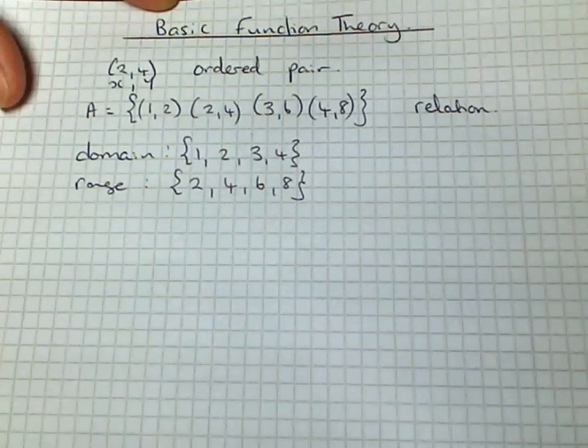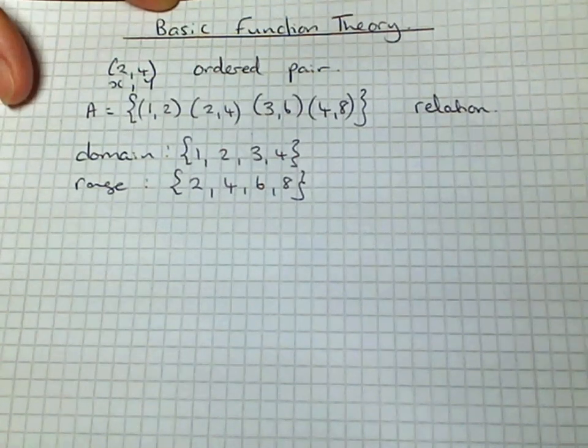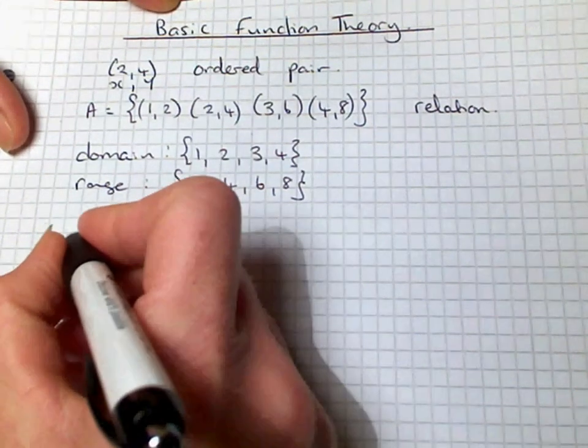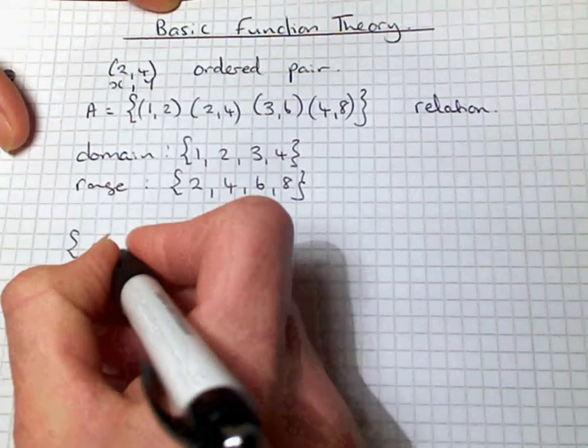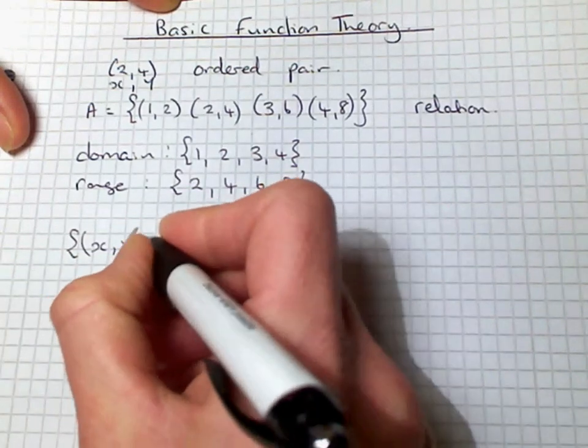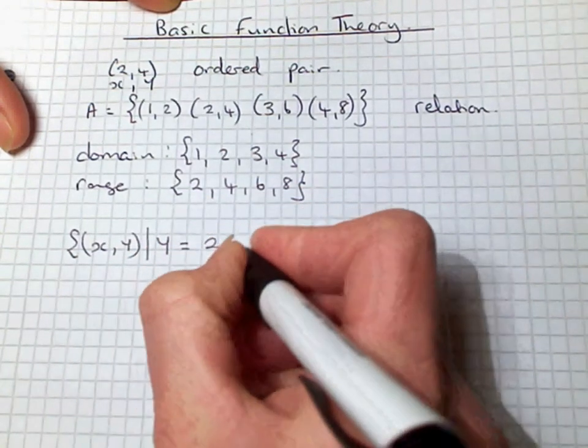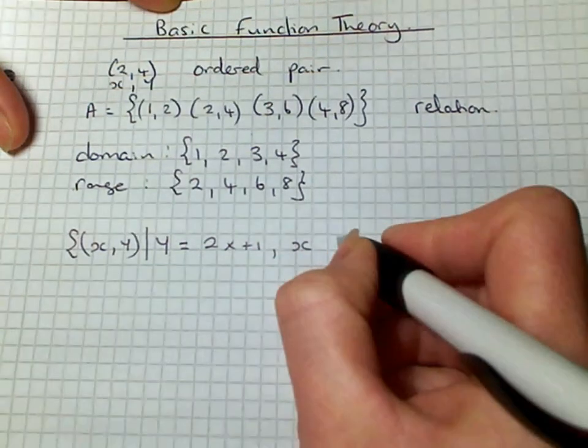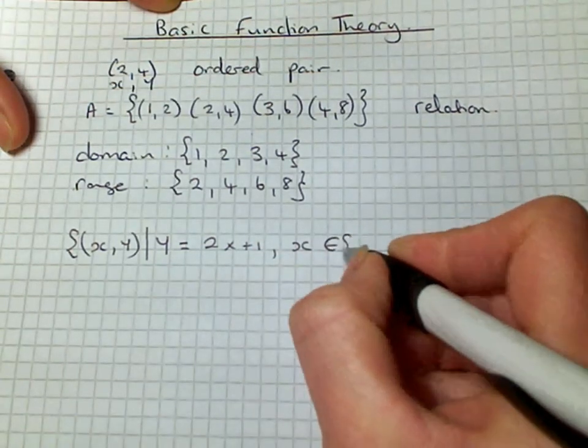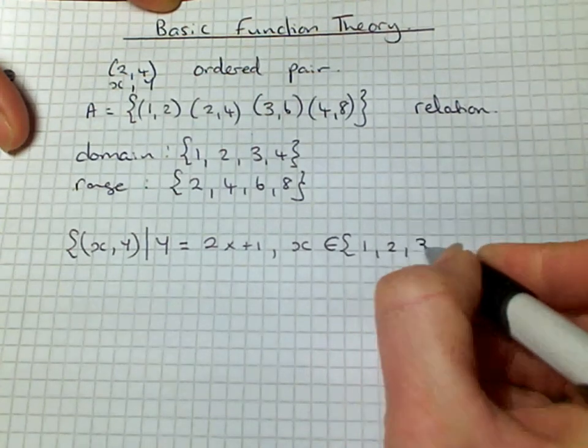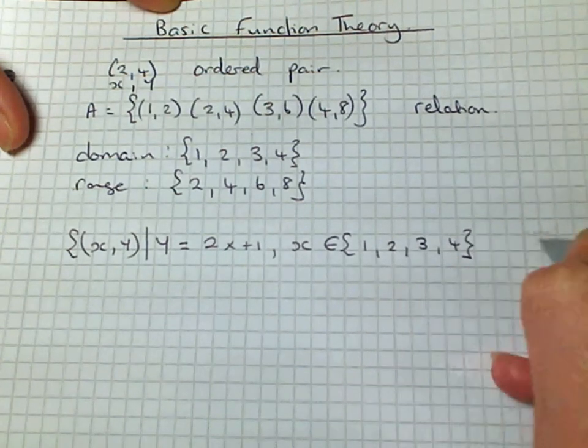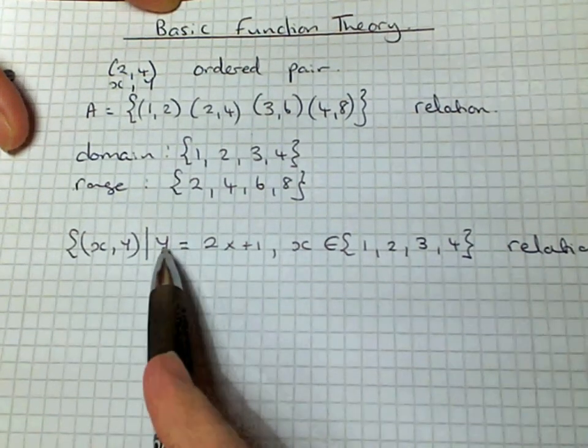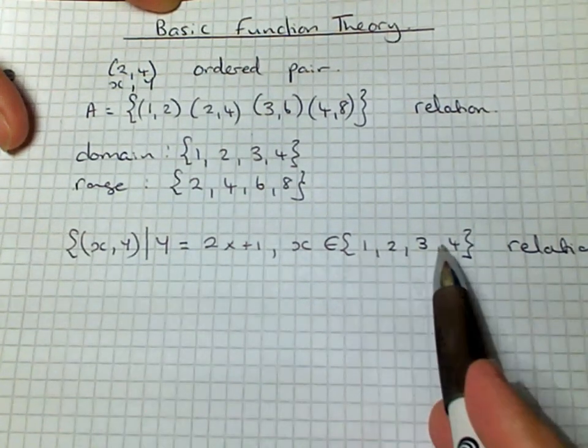Some of these functions can be defined by a rule. If we take an example such as the function S(x, y) where y is defined as 2x plus 1 and our x values are an element of the numbers 1, 2, 3, and 4, that is our relation. This is our y and these are our x values.